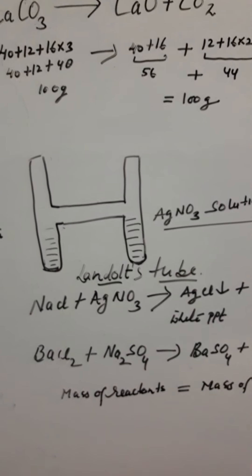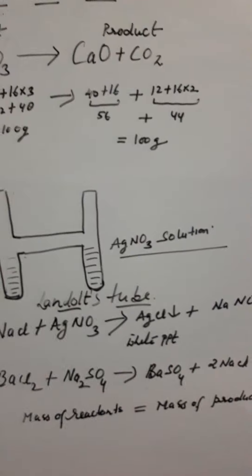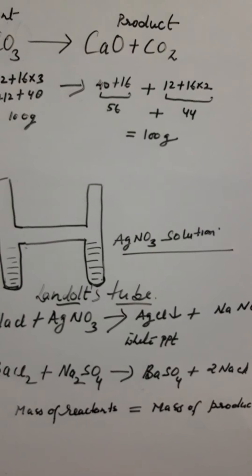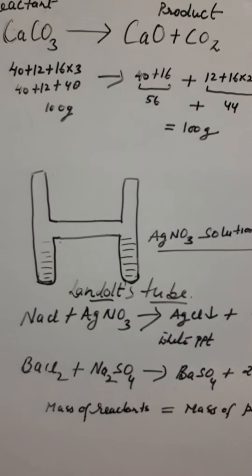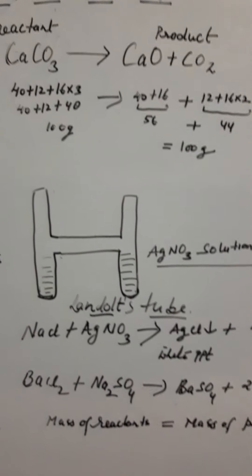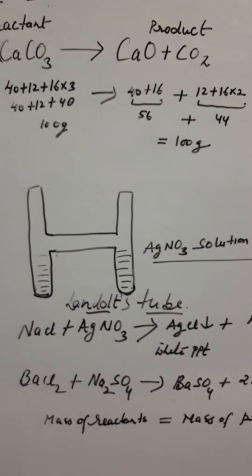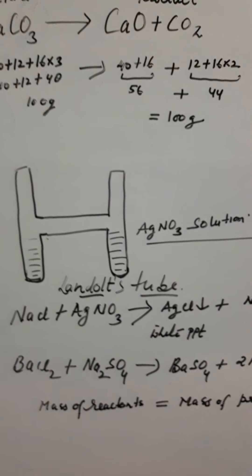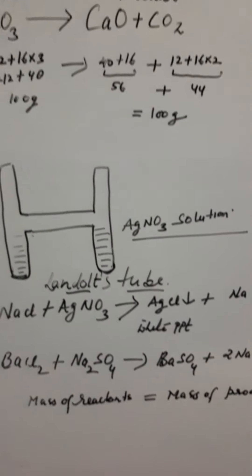Sodium chloride solution reacts with silver nitrate to form a white precipitate of silver chloride (AgCl) plus sodium nitrate (NaNO3). Again we take the weight of the tube. The mass of the tube is found to be exactly the same. There is no change in mass, which verifies the law of conservation of mass.